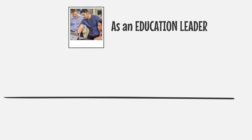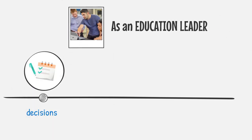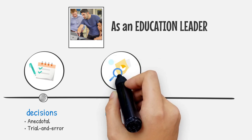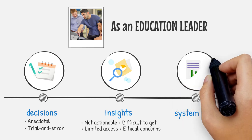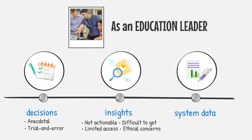As an education leader, many important decisions that you make may be based on anecdotal information and trial and error. Getting actionable insights from system data can be difficult. The insights may only be usable by a limited number of people, and you have concerns about the ethical and responsible use of the insights. Your CIO may tell you that system data is complicated and costly to manage, that it's siloed, and it's not secure.